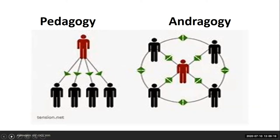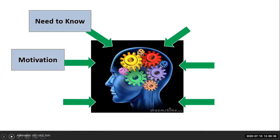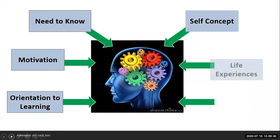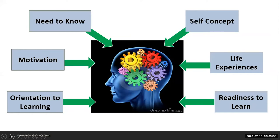So that's andragogy in a nutshell, and I really want to help you understand what the core concepts are. These are the six core concepts of andragogy: our adult students need to know, they need some motivation, orientation to learning, self-concept, life experiences, and readiness to learn. These are the six core principles, and I'm going to break them all down and make some connections to our classrooms.